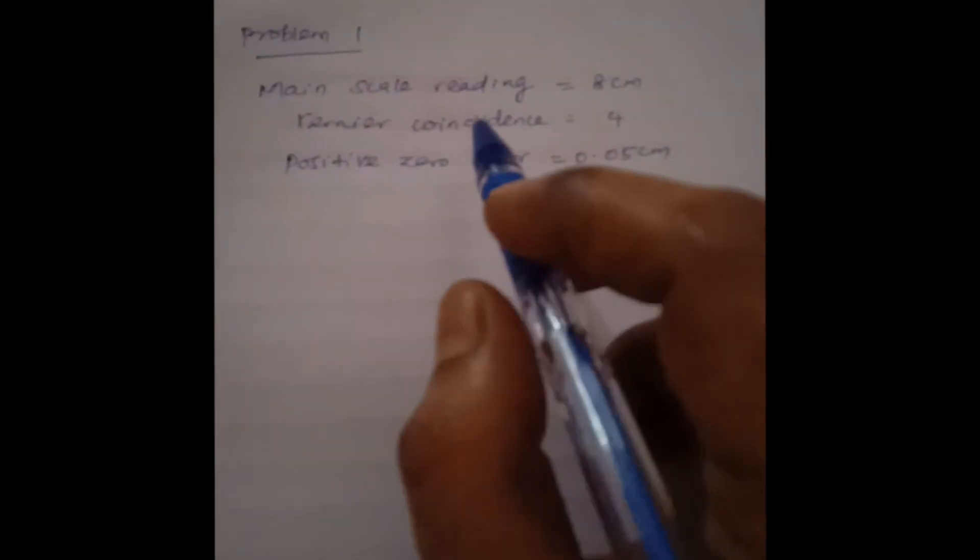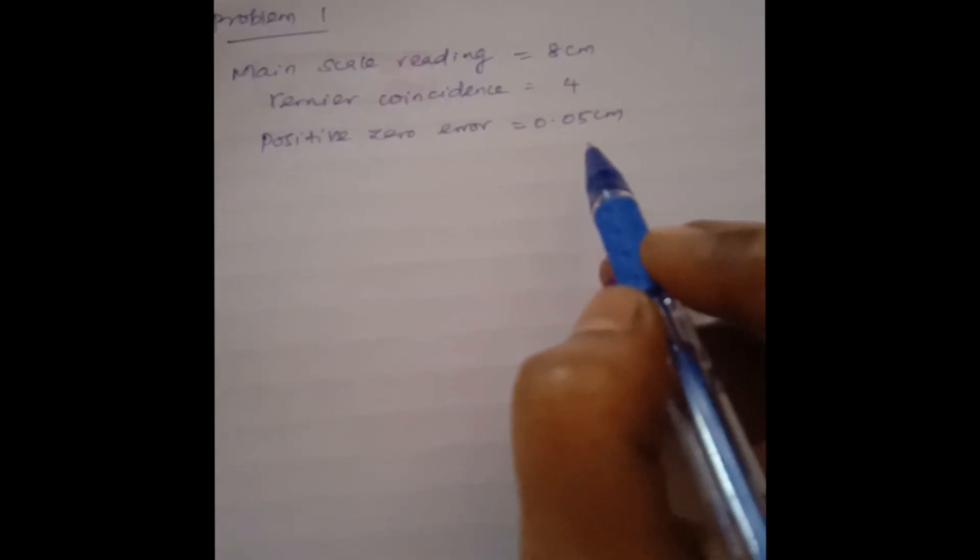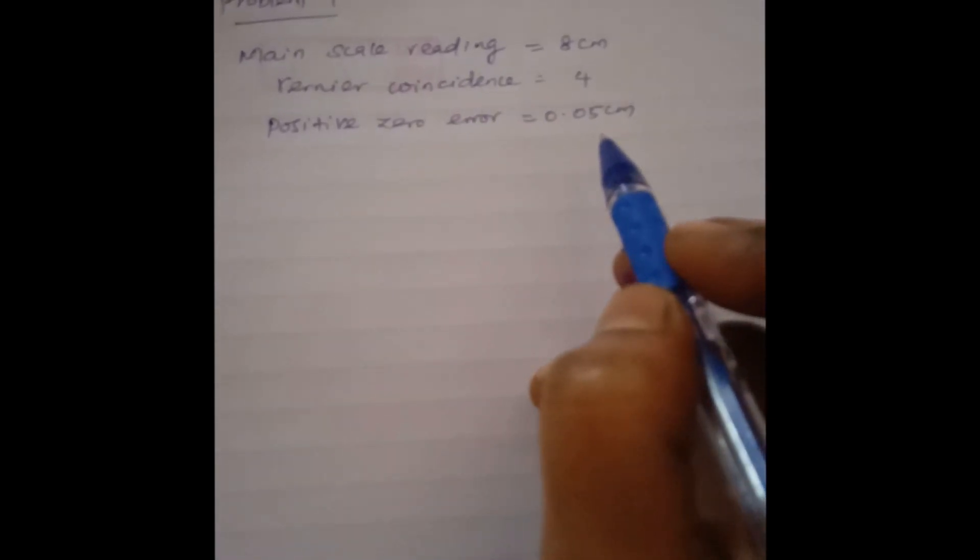I have taken the information given in the problem and written it here. Main scale reading 8 cm, vernier coincidence 4, positive zero error 0.05 cm. Now what we are going to calculate is the correct reading. If there is a positive zero error, we have to calculate the zero correction — positive zero correction first.